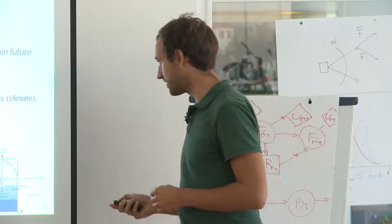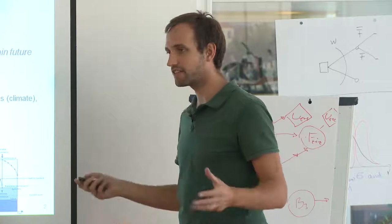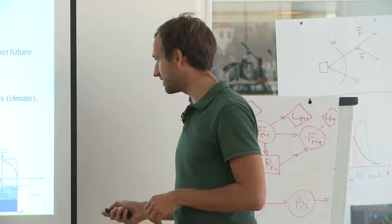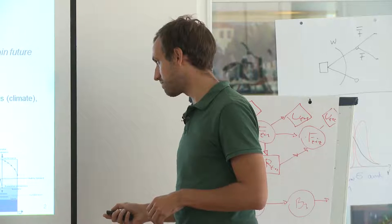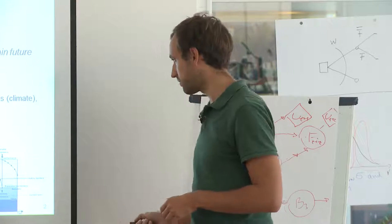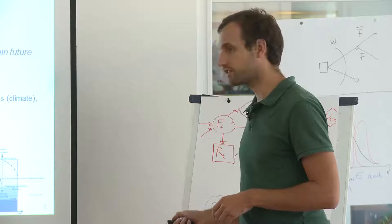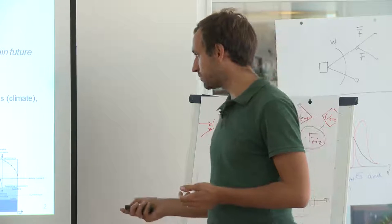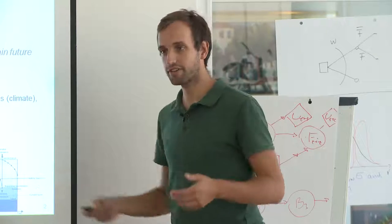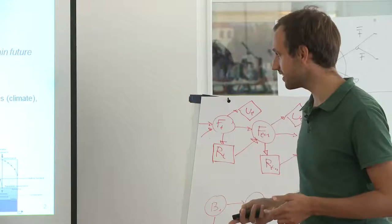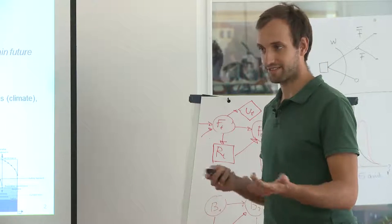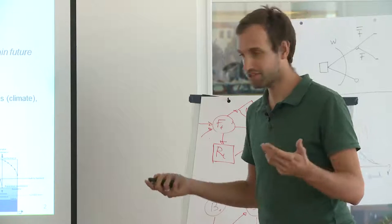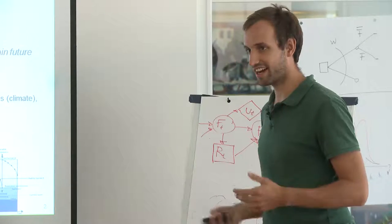There's this challenge where we have all kinds of different measures. We can do site investigations to better characterize the dike, we can improve them by adding more soil or adding structures, or relief wells to relieve water pressure, or reduce waves by putting vegetation in front of it. They all have their respective uncertainties, and my main topic is how we can get a good strategy from that.